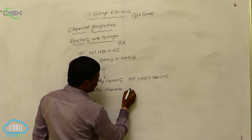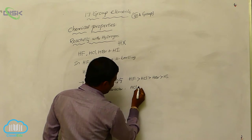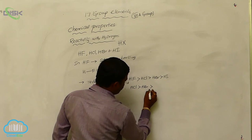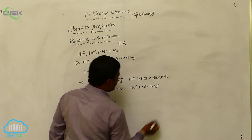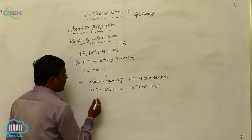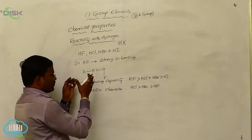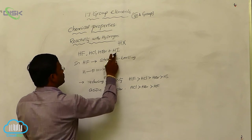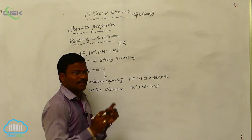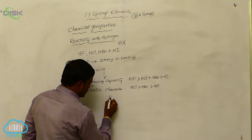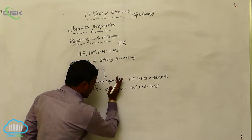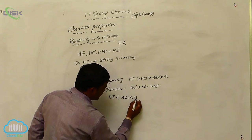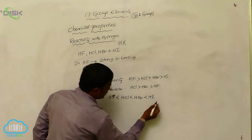Except hydrogen fluoride, the acidic character remains as: hydrogen chloride is greater than hydrogen bromide is greater than hydrogen fluoride. Similarly, the bond dissociation energy from hydrogen fluoride to hydrogen iodide decreases, so: hydrogen fluoride is less than hydrogen chloride is less than hydrogen bromide is less than hydrogen iodide.